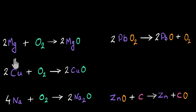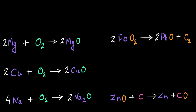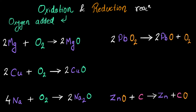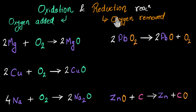We saw that there are certain chemical reactions in which oxygen gets added, and then there are certain chemical reactions in which oxygen is removed, and we gave them special names. We call them oxidation and reduction reactions. Oxidation means oxygen is getting added, and reduction is the opposite — it means that oxygen is removed. There are many more things happening under oxidation and reduction, and that's exactly what we are going to talk about in this video.